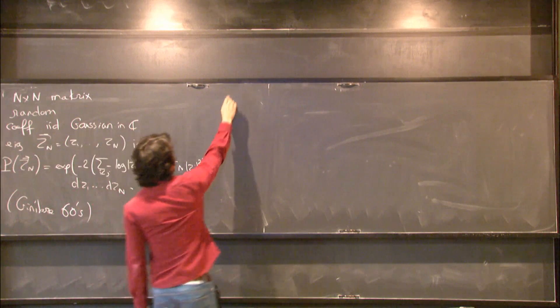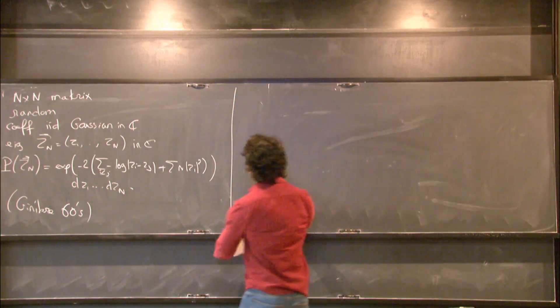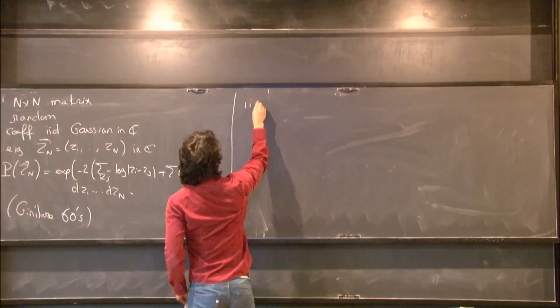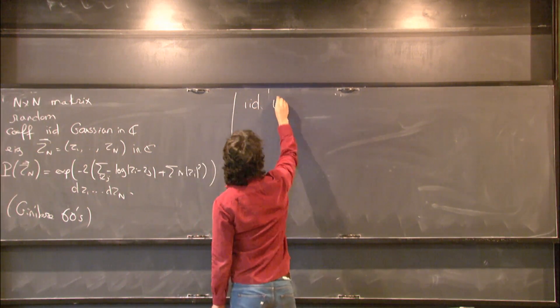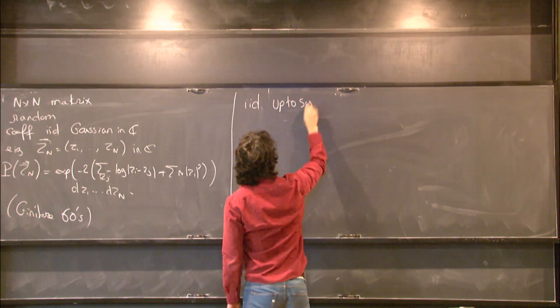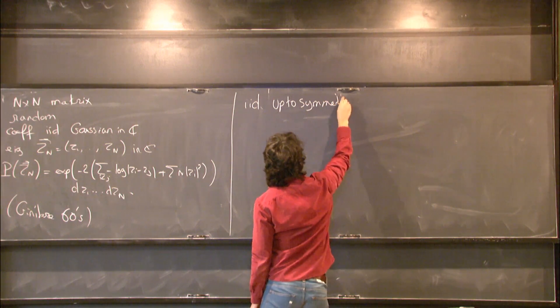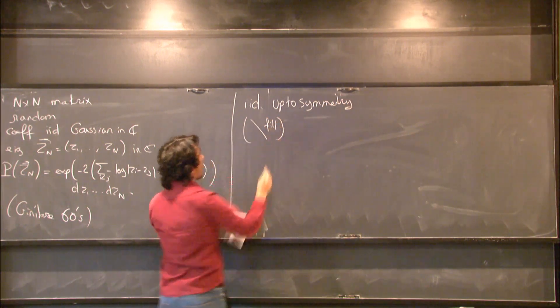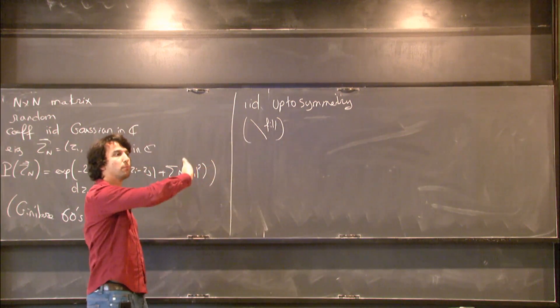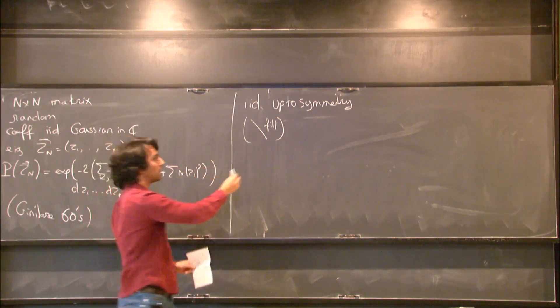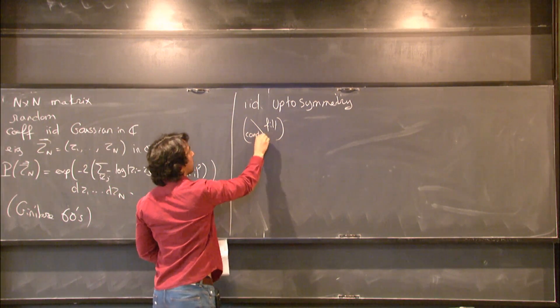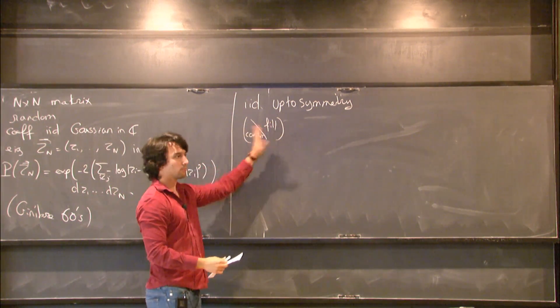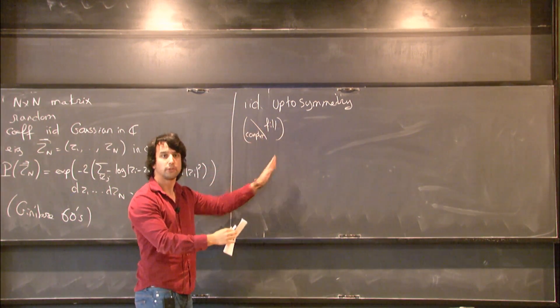Let me do the same problem but now I'm going to impose symmetry. So I do the same thing. I take IID coefficients but only up to symmetry. What do I mean by that? Really what it means is that you take your matrix, you fill half of it with IID coefficients and you complete the matrix in order to. So here you just, whatever you've chosen here, you take the conjugate and you put it here. So you impose symmetry.